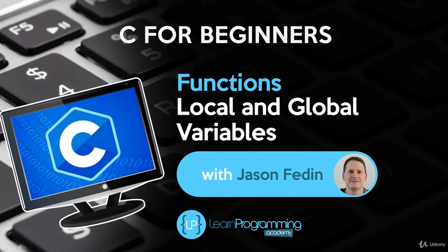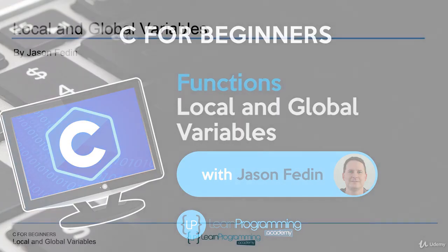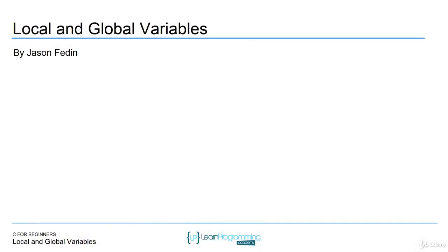Hello, welcome back. In this lecture I want to talk about local and global variables. This is really the concept of function scope, or in general program scope. It has to do with when you can use variables and when you cannot use them.